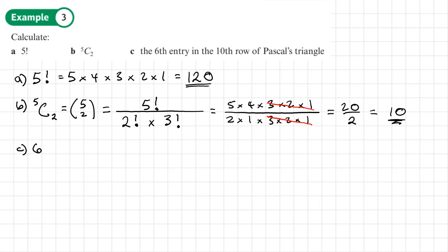Part c, we're trying to find the sixth entry, so we're going six numbers across in the 10th row. Now, from what we said before, if it's the 10th row, then n is going to be 10 minus 1, which is 9. And if I'm going to the sixth entry, 6 minus 1 is 5. So 9c5, 9 choose 5, is going to give me that entry, which I can write as 9 over 5.